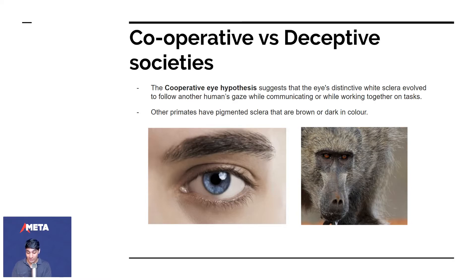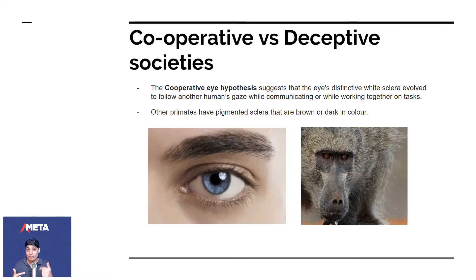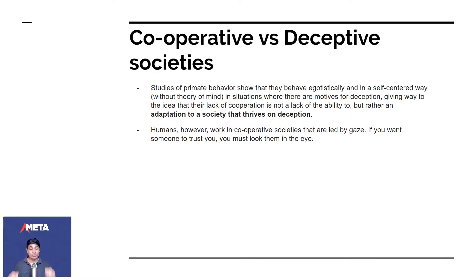You know when a person is looking down at their phone and not paying attention. That idea or principle is very critical to how humans work with each other. Other primates like monkeys have pigmented, dark brown sclera, and you can't see where monkeys are looking.